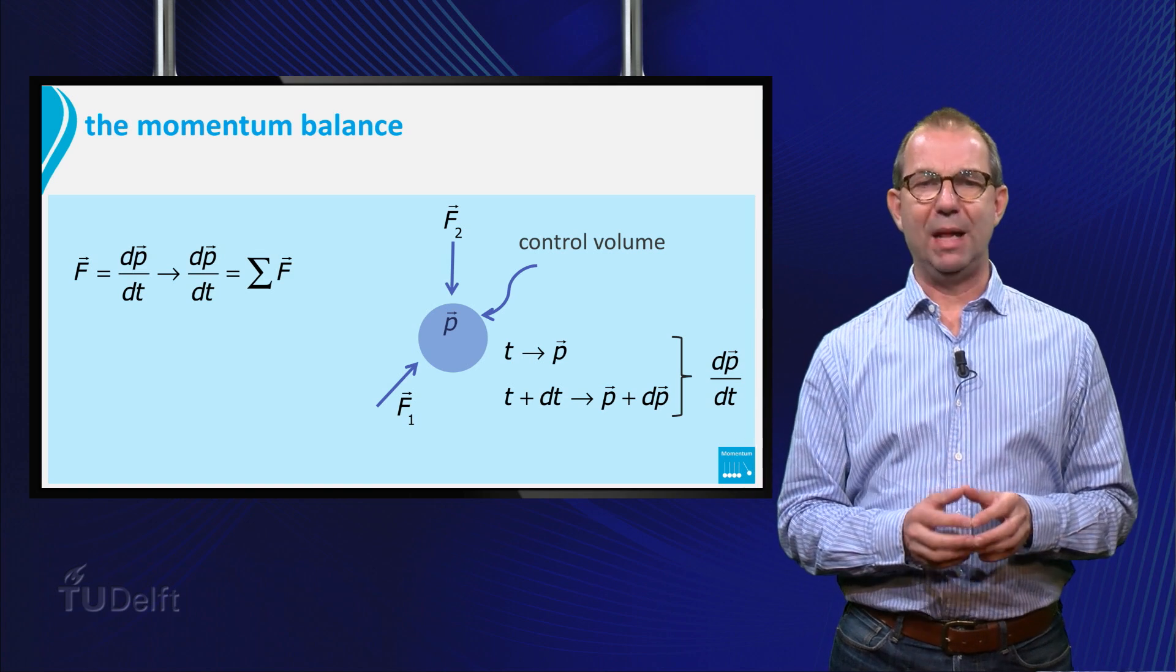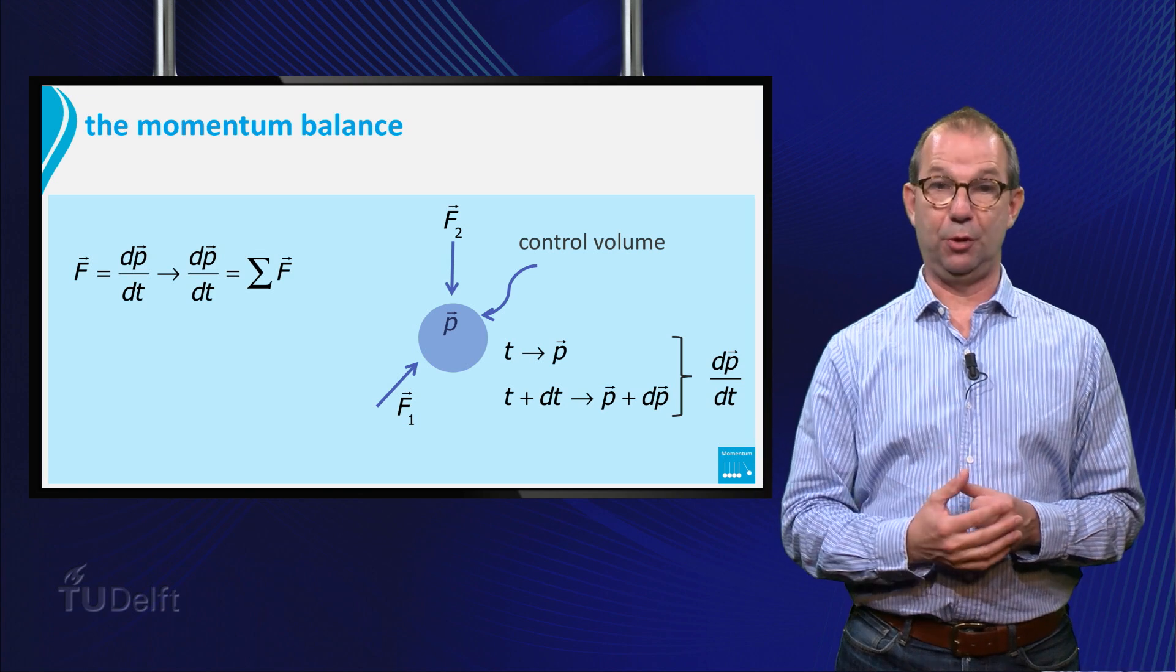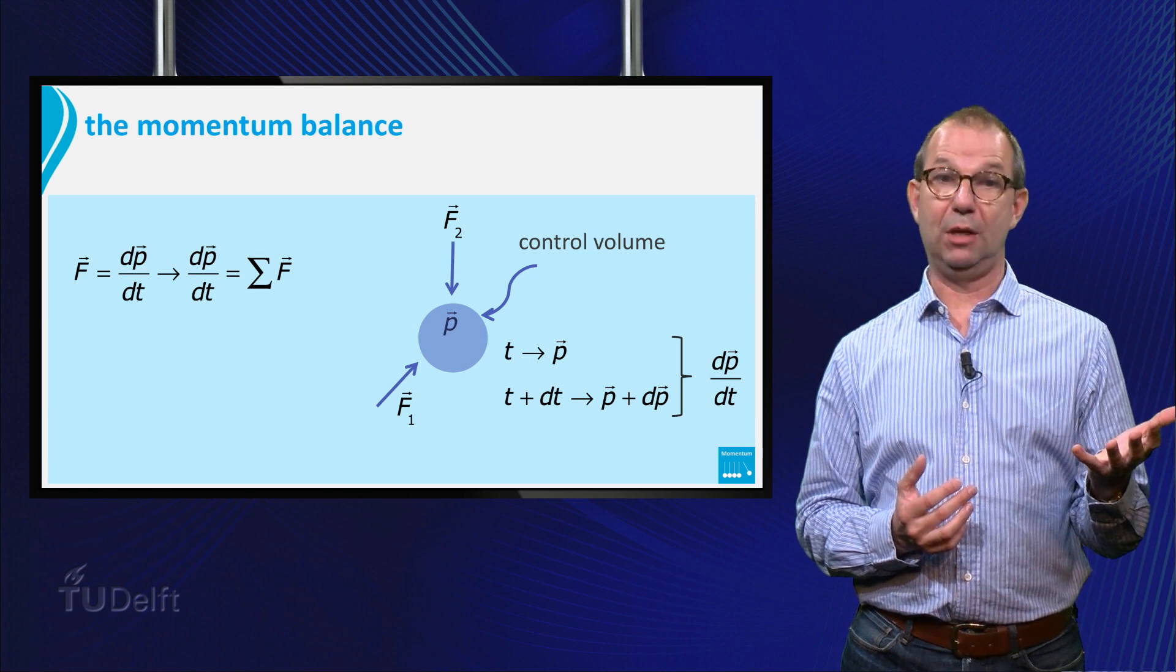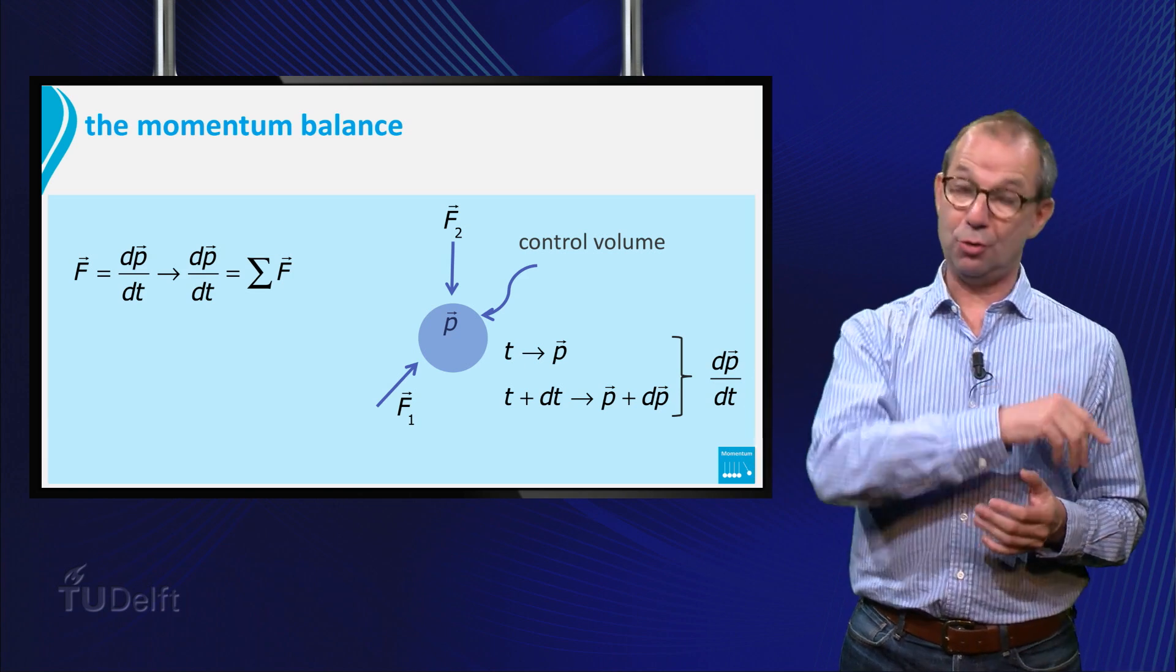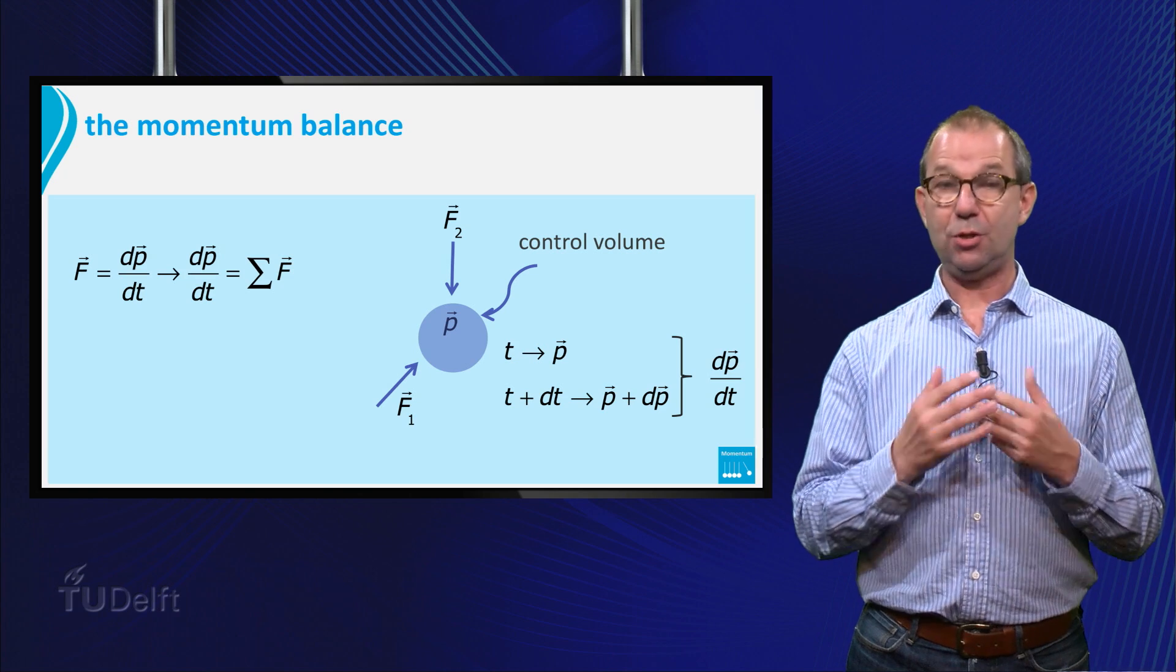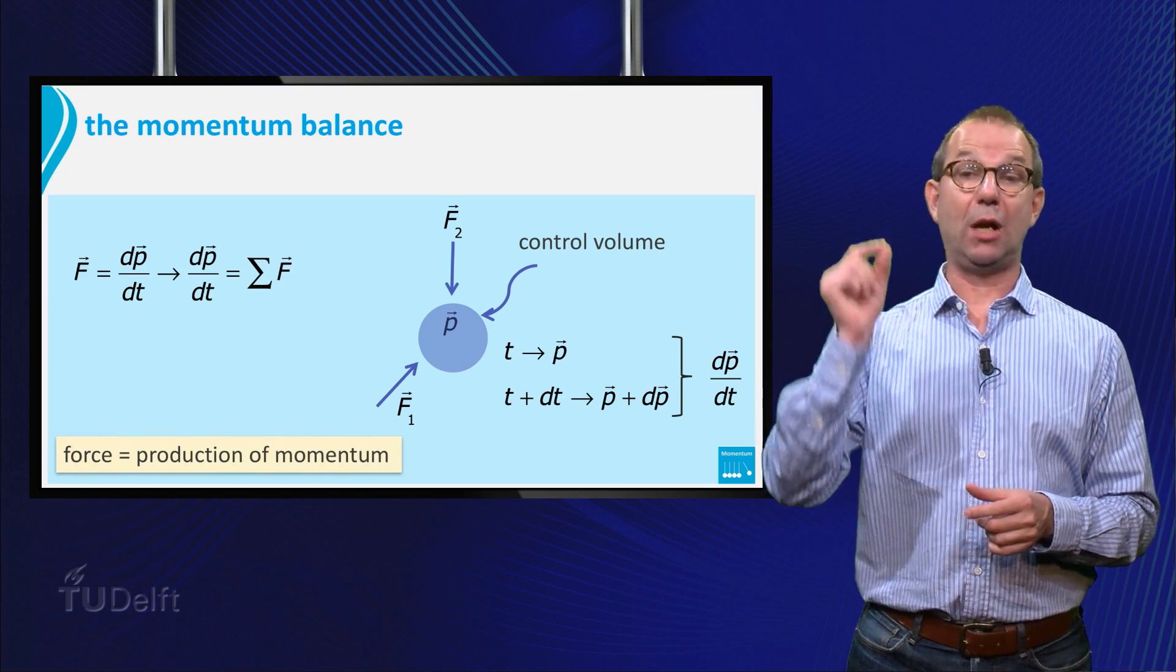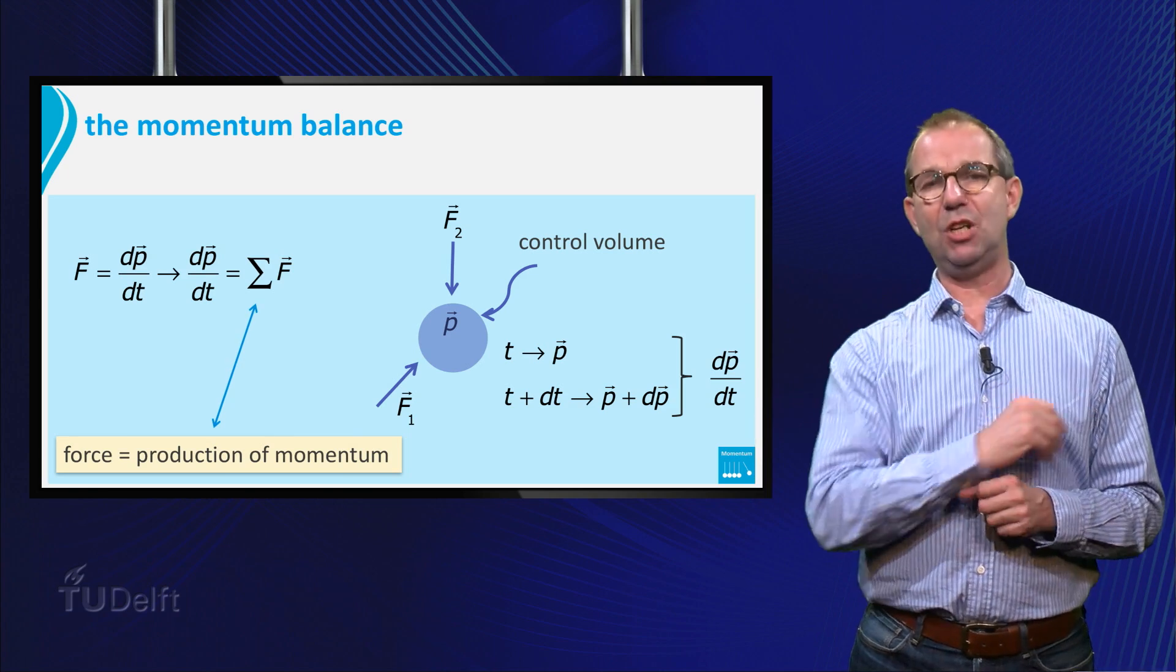Let's assume that the momentum has increased. Then from the balance point of view we would say, either momentum has flow in through the boundary of the control volume, or momentum has been produced in the control volume. For this object, there is no in or out flow. Thus we conclude that we can also interpret force as production of momentum. Newton wrote the first balance equation.